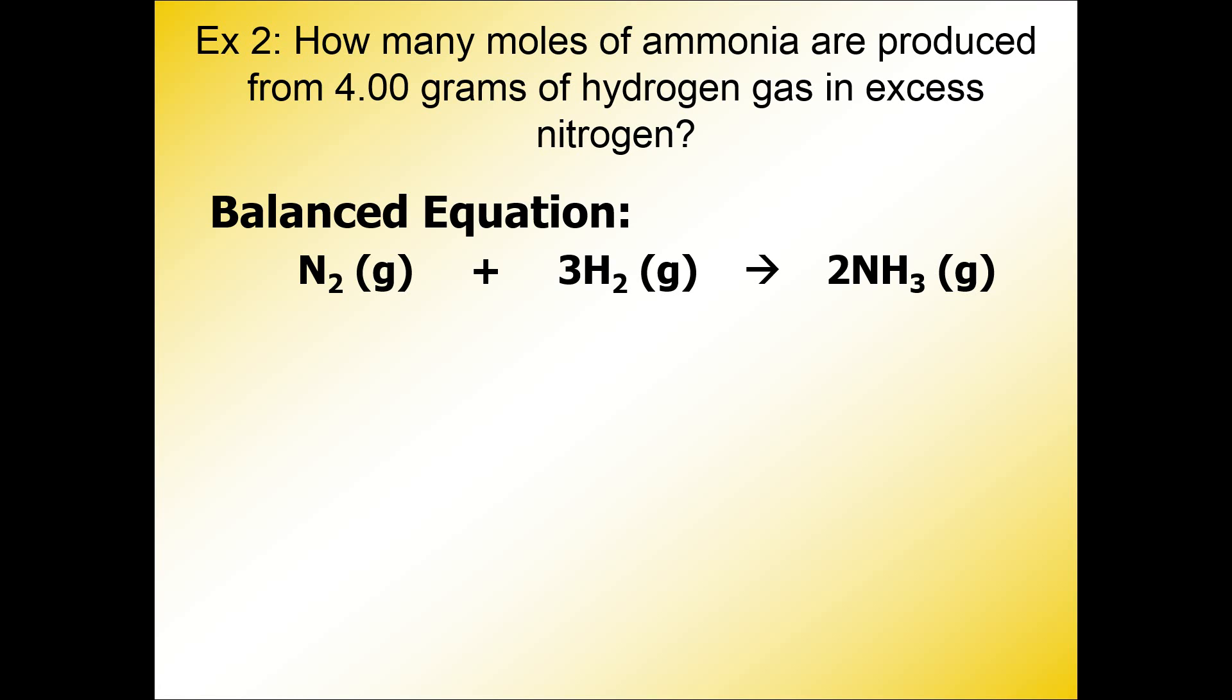In this lesson, I'm going to show you how to solve the following problem. How many moles of ammonia are produced from 4.00 grams of hydrogen gas and excess nitrogen?